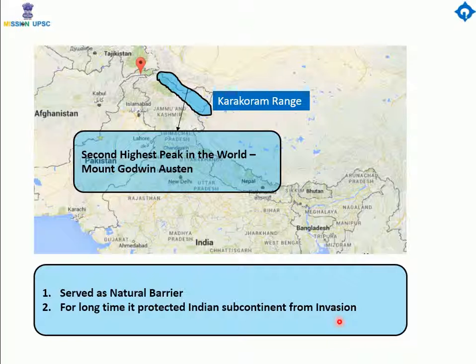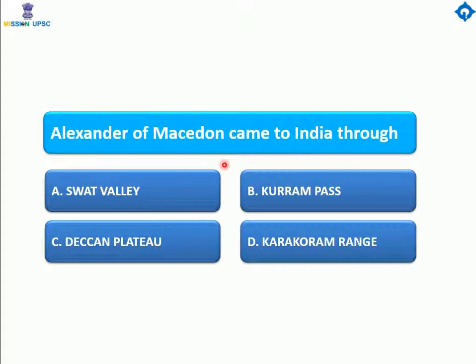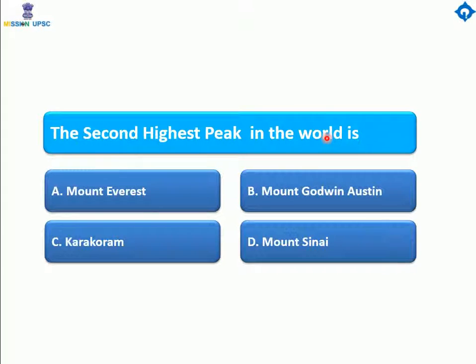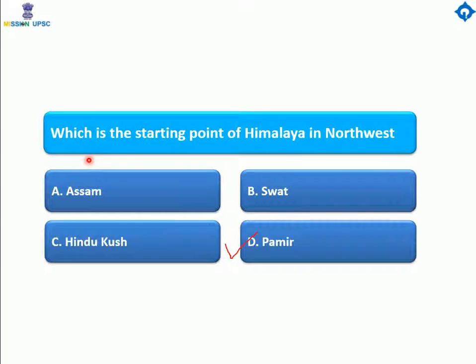Now let's move on to the questions. The first question is: Alexander of Macedon came to India through which route? The answer is the Swat Valley — that is option A. The second question: what is the second highest peak in the world? It cannot be Mount Everest since that is the highest peak. The correct answer is Mount Godwin Austin. The third question: which is the starting point of the Himalayas in the northwest? As we discussed, it is Pamir.